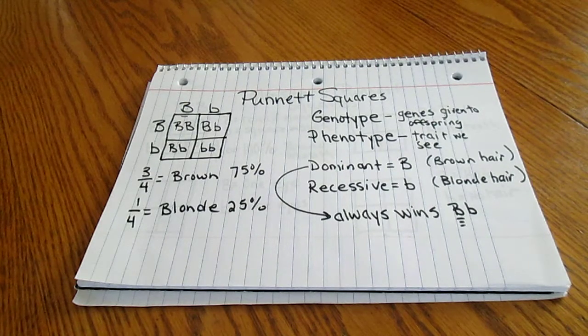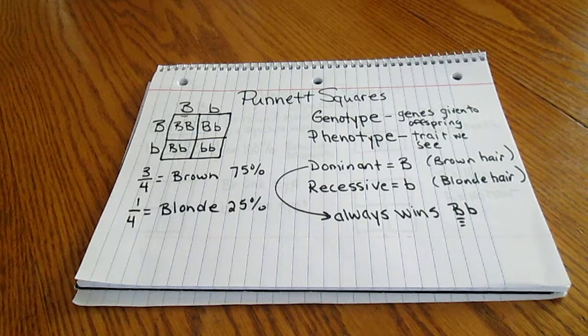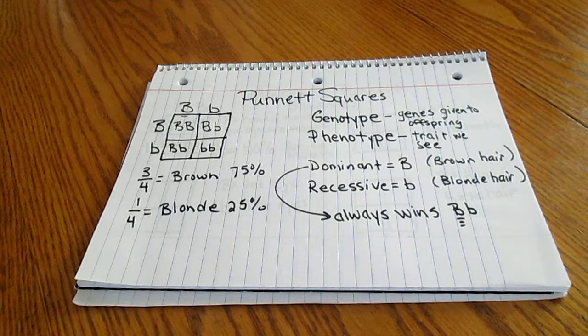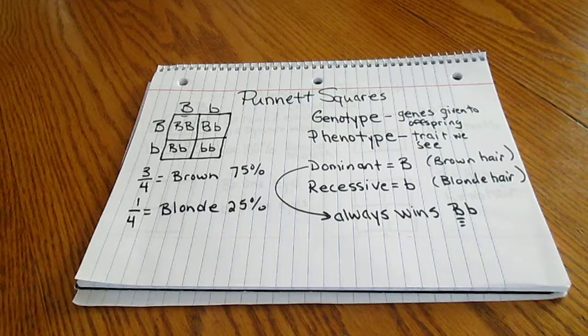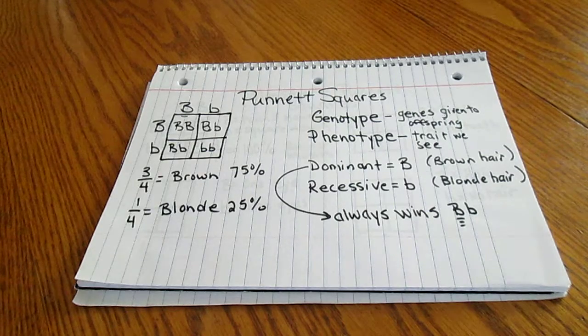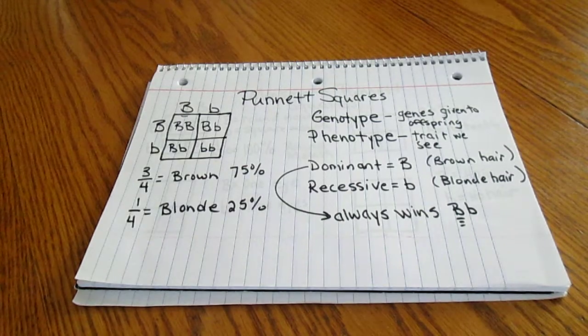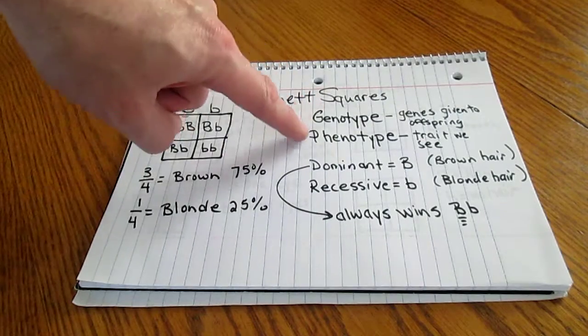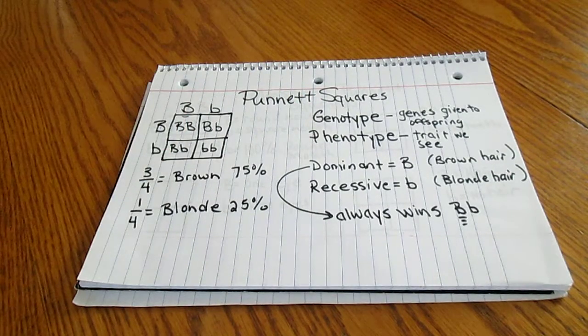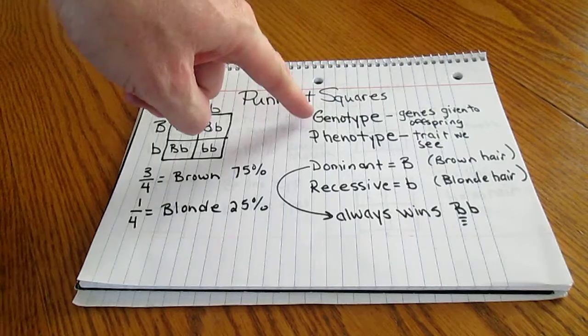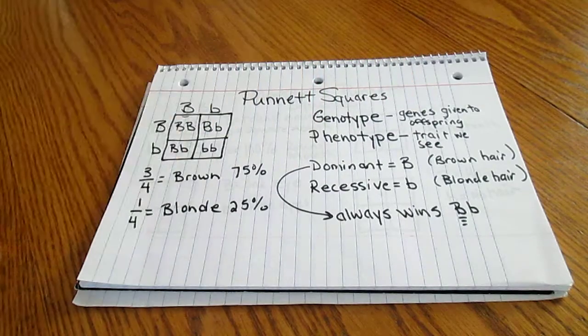Hi guys, this is just a quick review of Punnett Squares as you move on into Ms. Rameza's Monsters Project. You're going to be doing a lot with genotypes and phenotypes, which are these definitions right here. As a reminder, genotypes are genes given to the offspring by the parents.